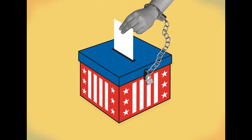Compulsory voting is a policy that requires eligible citizens to register and vote in elections. The practice has roots in the democracy of ancient Athens, where the social norm was that every citizen had a civic duty to participate in political decisions. Attendance at the assembly was mostly voluntary, though there were cases in which citizens were herded from the Agora, or public space, to the Pnyx, or assembly meeting place, with a stained rope.